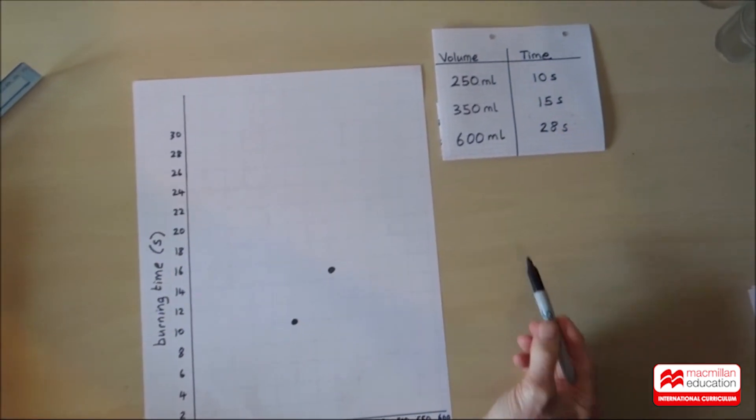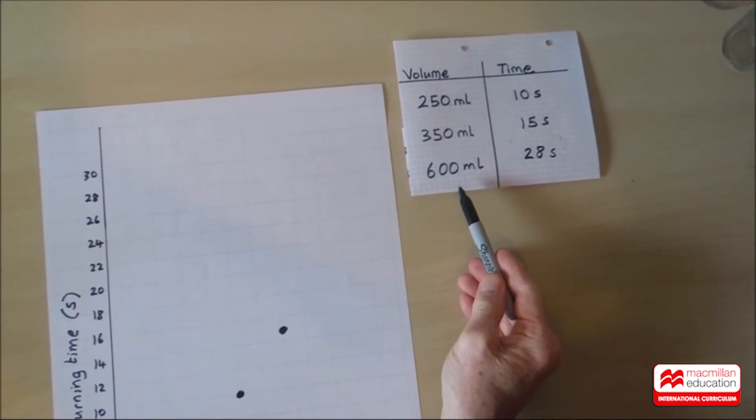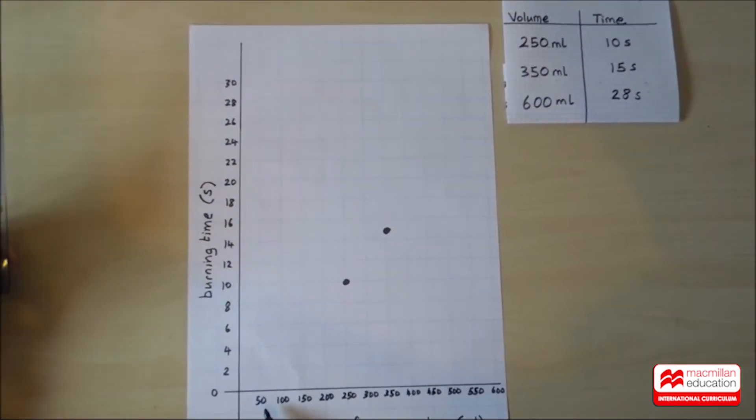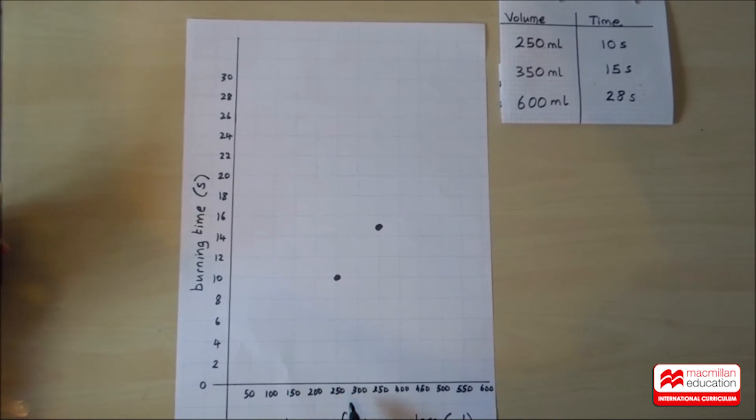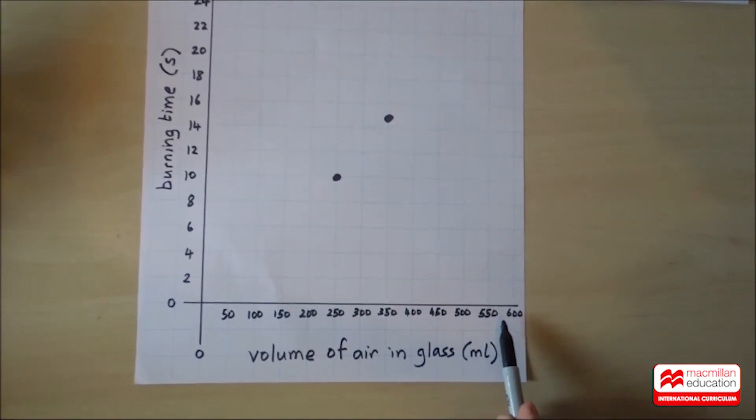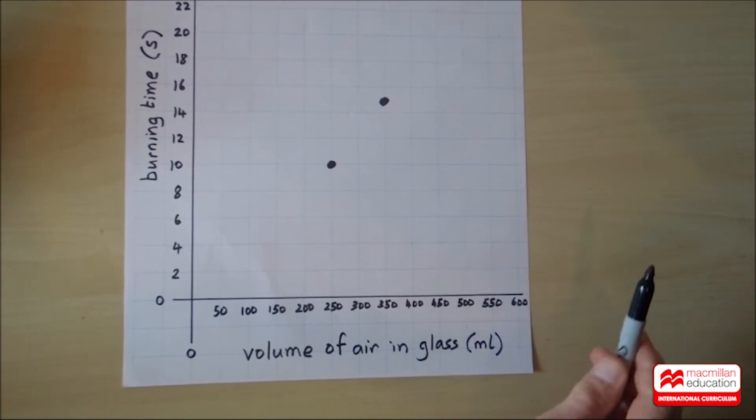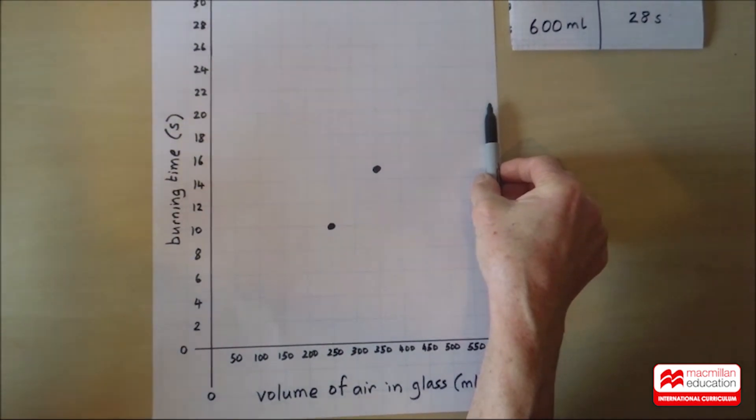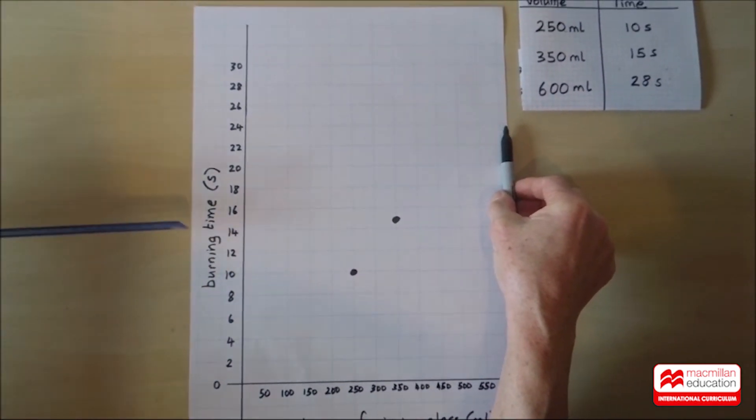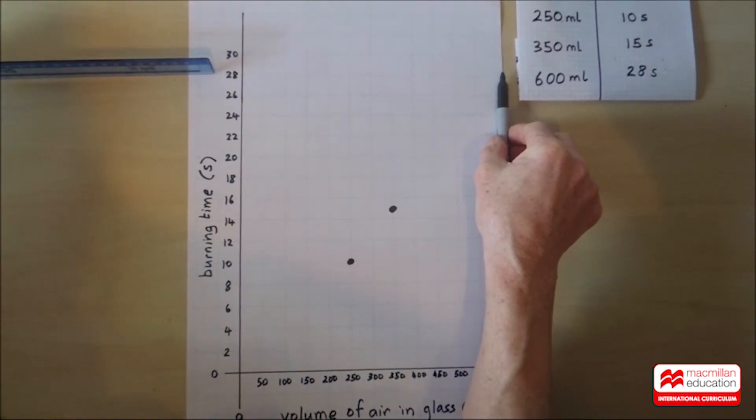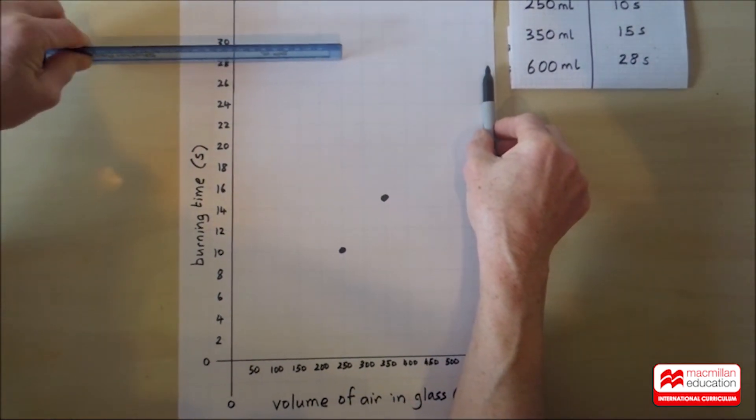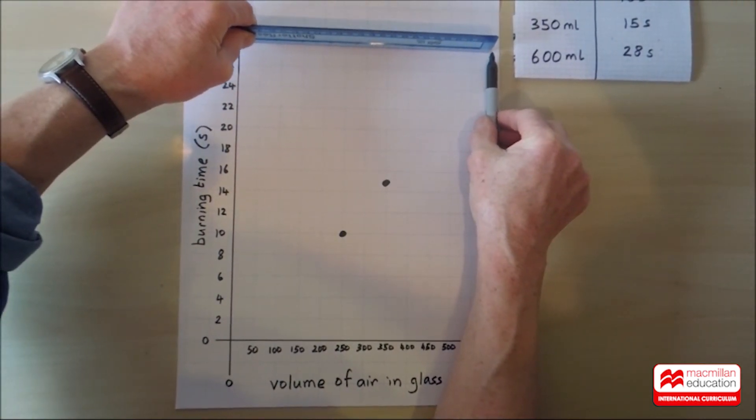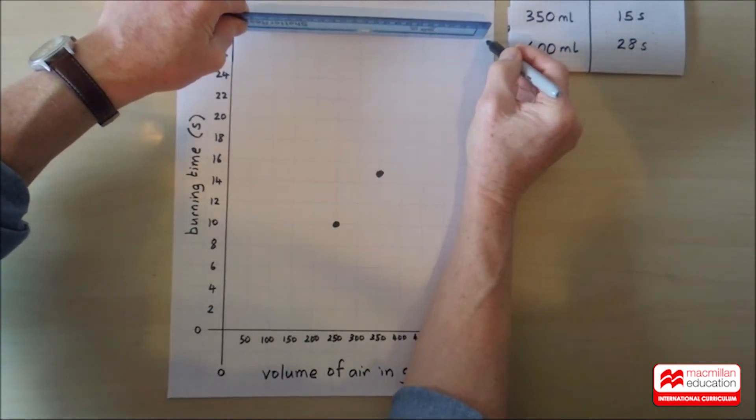And now time for the third result. A volume of 600 mil took 28 seconds. Where's 600 mils on our line of volumes? It's right up here, right at the end. So it's the very last line on my piece of paper, all the way up here. And let's see if we can find 28 seconds. Here's 28 seconds. And here's the 28 second line. And it's going to meet the 600 mil line here. This is our third point. Now we have all three data points on our graph.